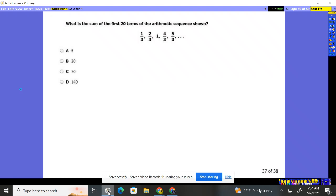Number 37. What is the sum of the first 20 terms of this arithmetic sequence? So they want us to add up one-third plus two-thirds plus one plus four-thirds plus five-thirds.